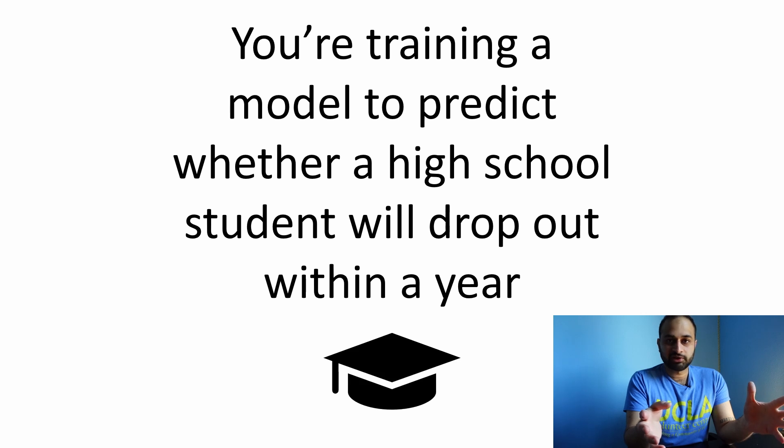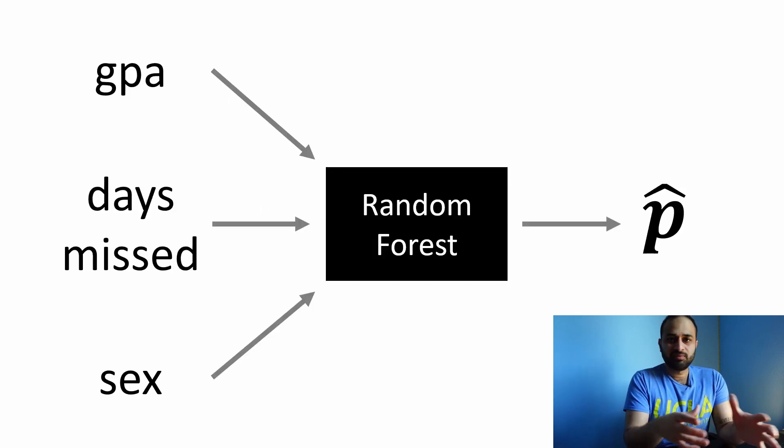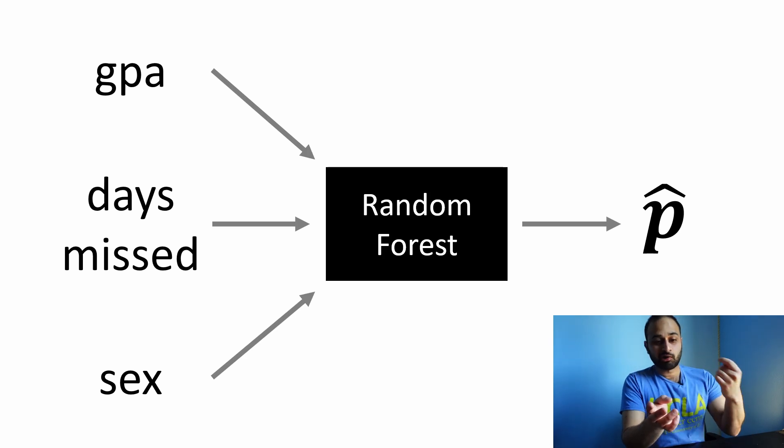Let's say you're the data scientist for some school district and you're training a model to predict whether a high school student will drop out within one year. To keep things simple, let's say you're going to have three features: their GPA, the number of days of school they've missed, and their sex. Let's say you're going to train a random forest. You put these three features into your random forest and it spits out a predicted probability, p hat, of whether or not the student will drop out.